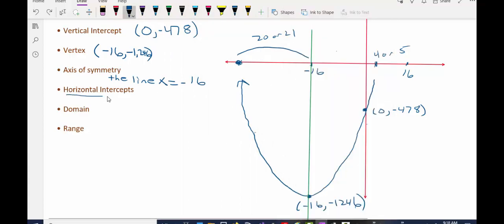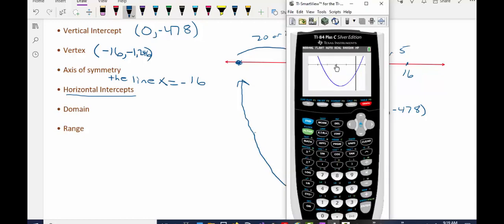What I'm going to do to find the horizontal intercept is I'm going to graph the line y equals 0, which is the equation for the x-axis, which is the horizontal axis, and I'm going to use my intersect feature to see where the parabola crosses y equals 0, meaning where does it cross the x-axis. That would be a horizontal intercept.